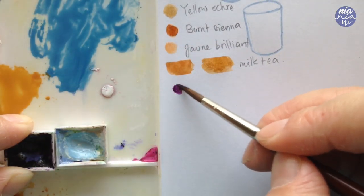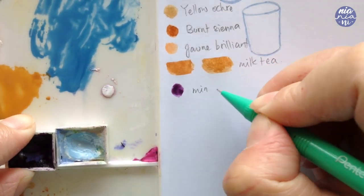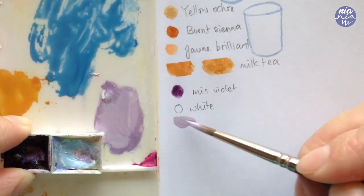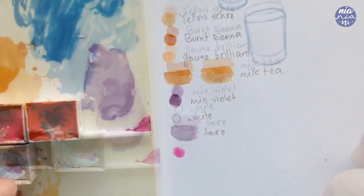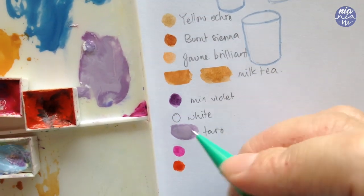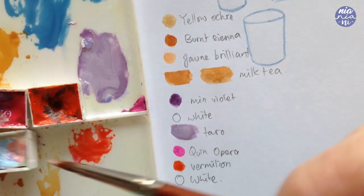Next I'm going to make the taro flavor and for that I'm going to mix in mineral violet and white. And for the last flavor, I'm going to make it a strawberry milk and for that I used quinacridone opera, vermilion and white.